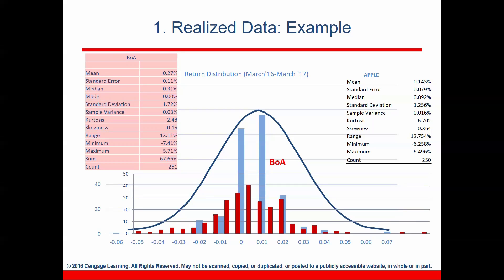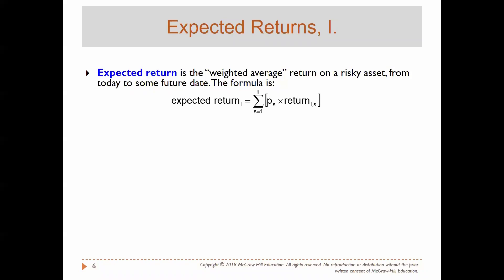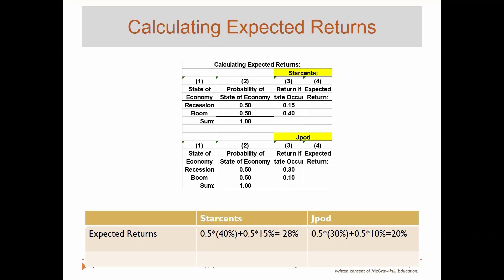If we don't have realized data, instead of columns we use curves like the blue or red ones shown here. For probabilistic data, we have a probability distribution, which lists all possible outcomes and the probability of each occurrence. To understand these graphs, we need to define two things: the first one is expected rate of return, and the second one is standard deviation. Let's start with expected return — it is the weighted average of return on a risky asset.